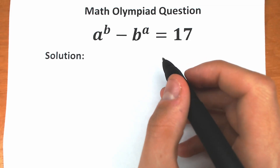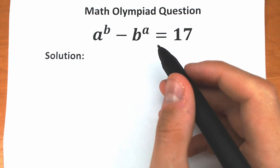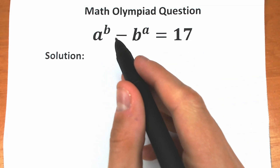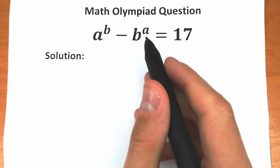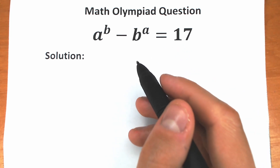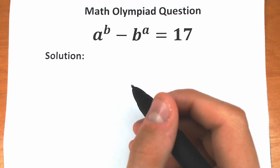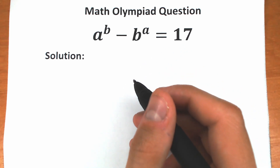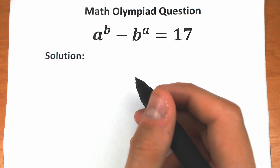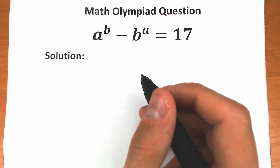Welcome back to my channel Higher Mathematics. We have a really interesting challenge today: a to the power b minus b to the power a equal to 17, and we need to find a and b. In this video I'm going to fully explain how to do this step by step.